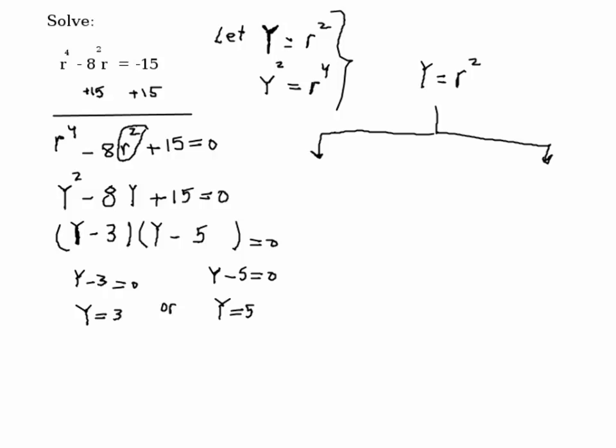Okay, if y = 3, then I'm going to solve for r: 3 = r². And I have another value for y: y = 5, so 5 = r².